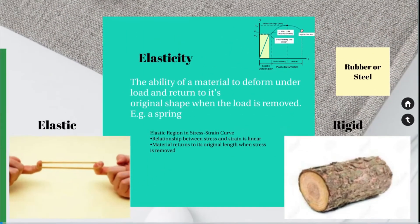First, elasticity. Imagine applying a load on a material. Normally, when a load is applied, the material tends to deform. When such deformation is very small, the structure can recover its original shape and size once the external load is removed. Such a deformation which is temporary and easily recoverable is called elastic deformation. In other words, the ability of a material to deform under a load and return to its original shape when the load is removed is called elasticity.